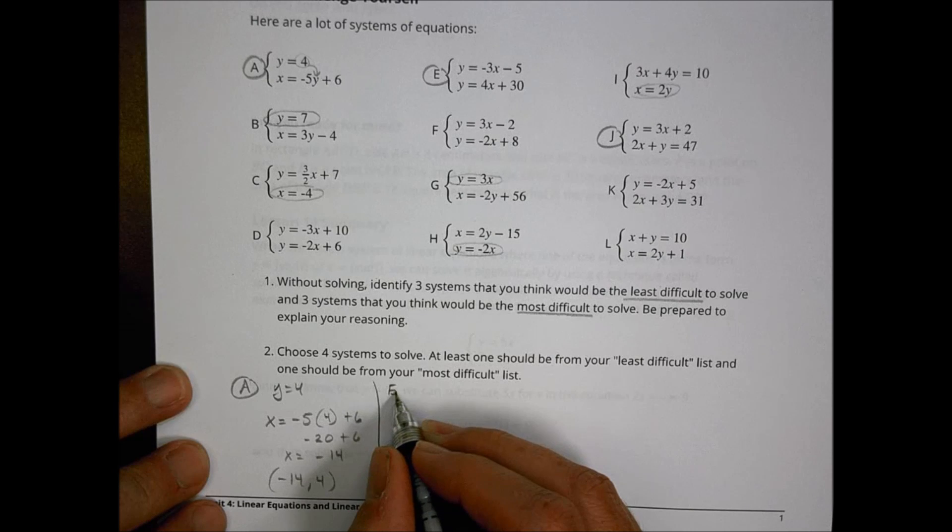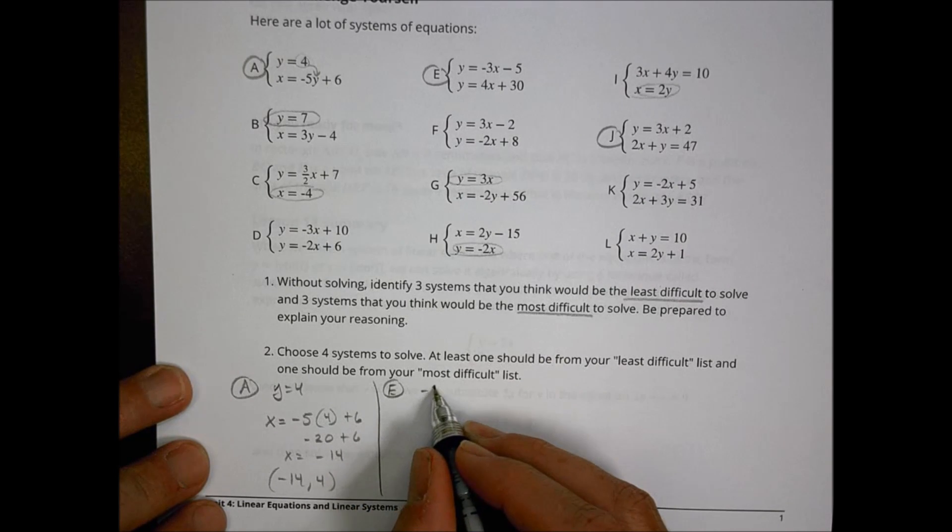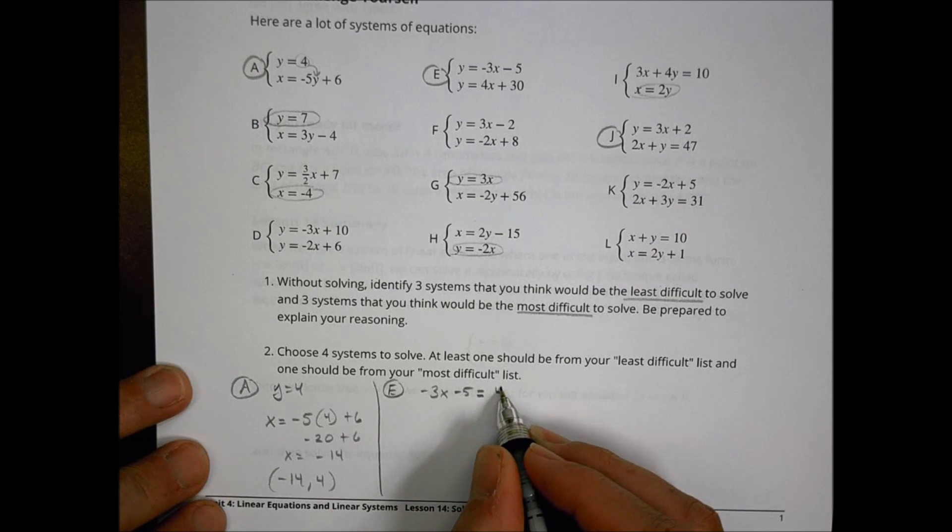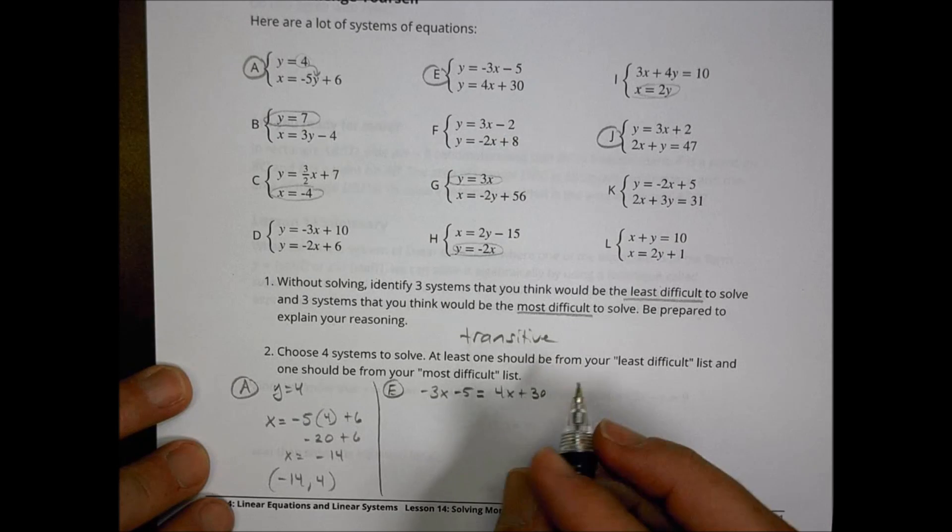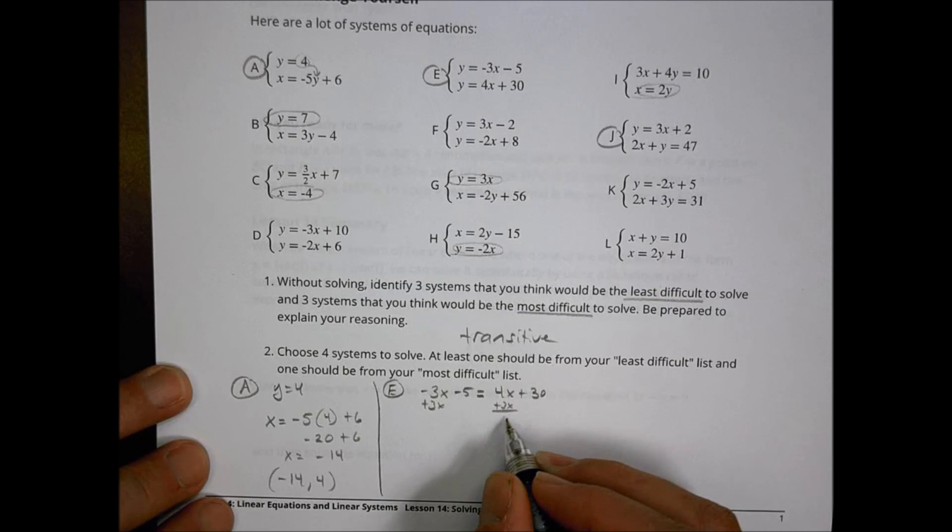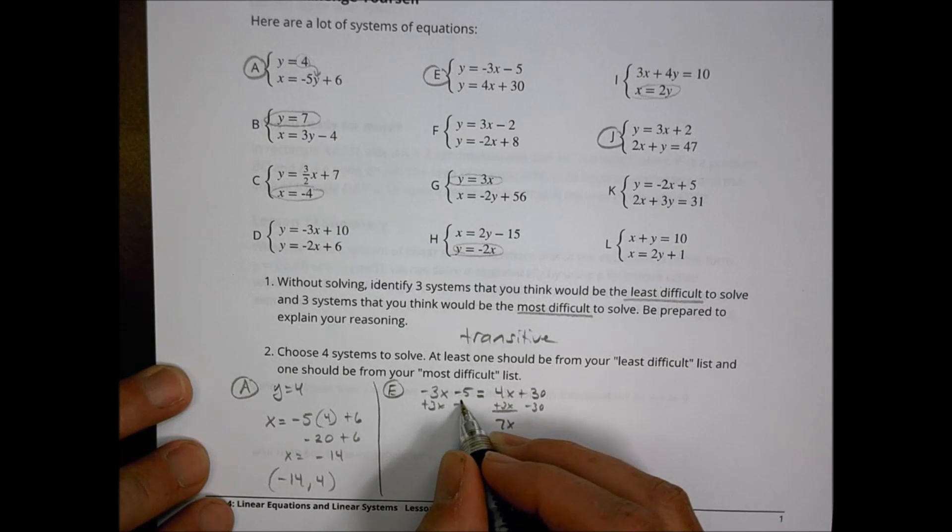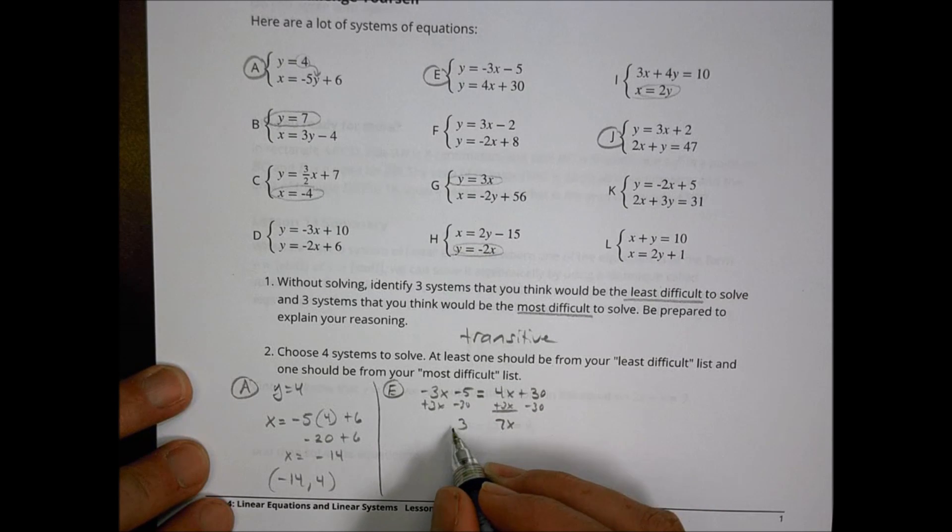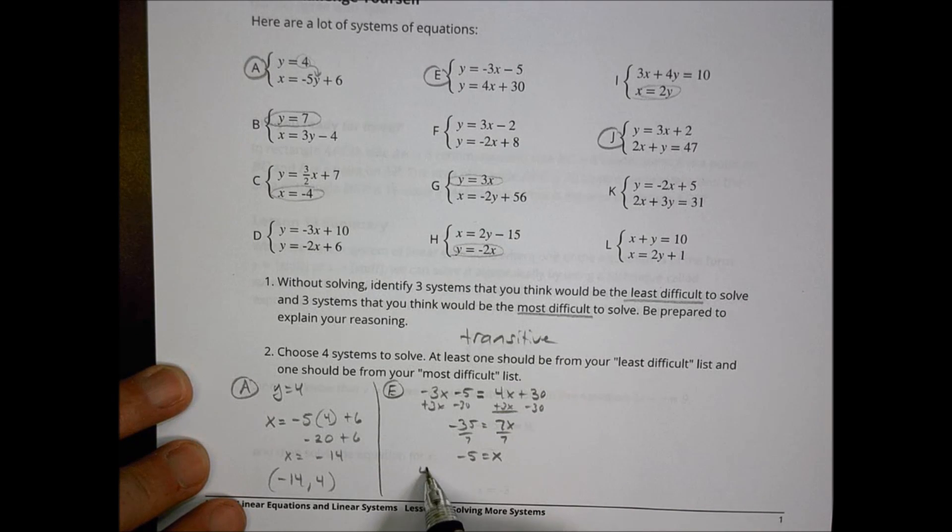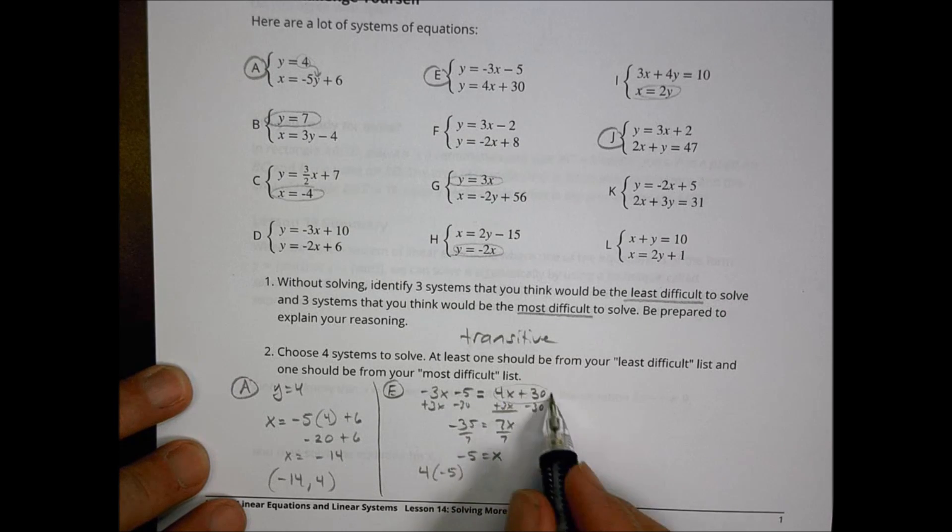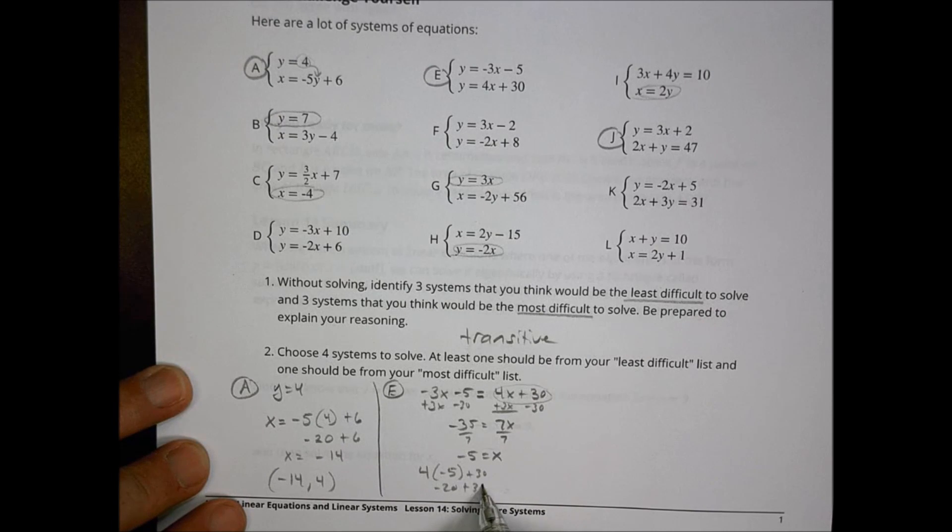When I look at E, E is a little bit more in the middle here. I have negative 3x minus 5, and I'm going to set it equal to 4x plus 30 because of the transitive property. It's going to allow me to set them equal to each other. I'm going to add 3x over here, add 3x over there. That gives me 7x. I'm going to subtract 30 to get that over there. So 30 and 5 make a negative 35. Divide by 7, and negative 35 divided by 7 is negative 5, and that becomes my x answer. Now I can take that value and plug it in. 4 times negative 5 plus 30, this becomes negative 20 plus 30, which is simply equal to 10, which is my value of y. So this solution becomes negative 5 comma 10 for letter E.